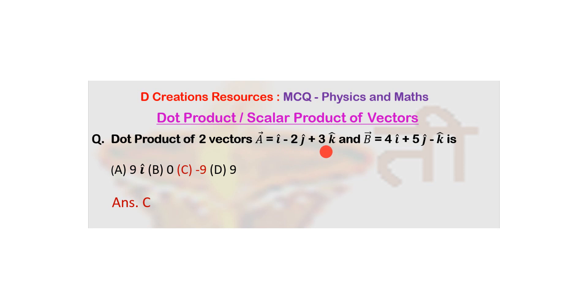And this is 3 and minus 1, so minus 3. So 4 minus 10 minus 3 or 4 minus 13 which is basically minus 9. So the answer is minus 9. So this is how dot product works.